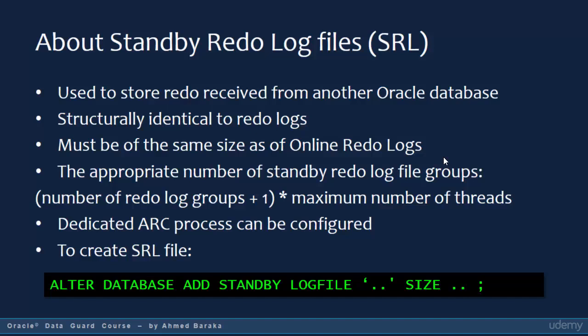When you configure SRL, they must be of the same size as the online redo log files in the primary database. For a single instance database, the number of standby redo log files equals the number of redo log files in the primary database plus one. If you have a RAC database, you use this formula: the number of redo log groups plus one, multiplied by the number of threads.